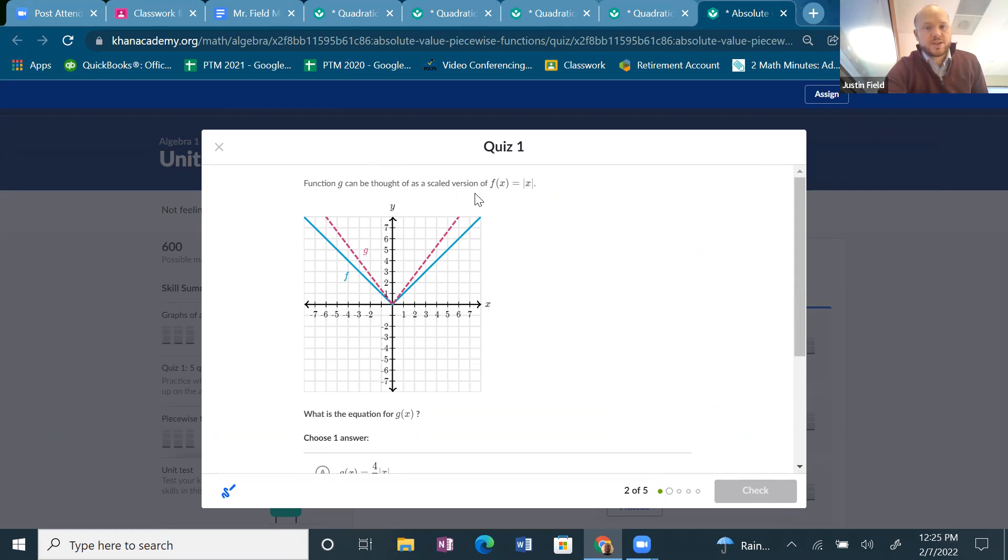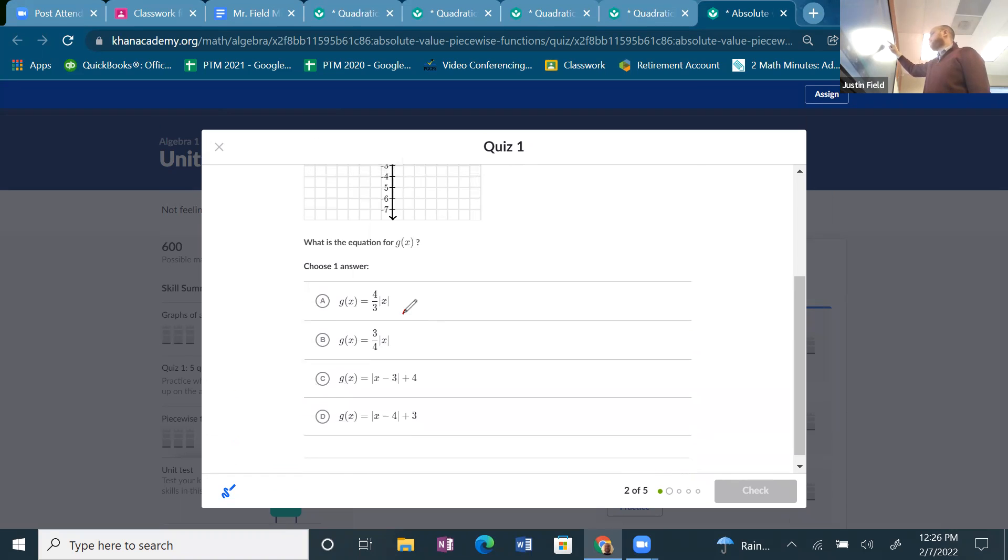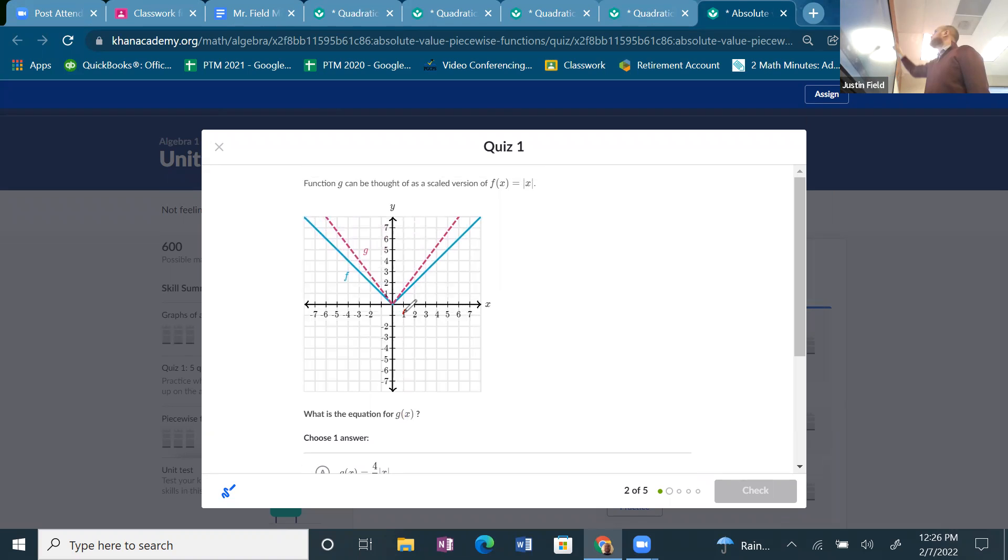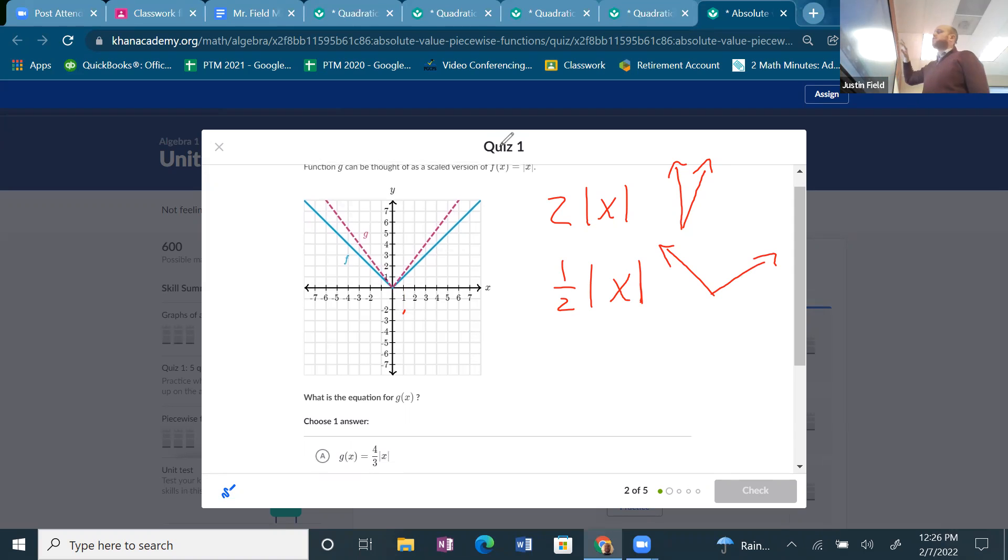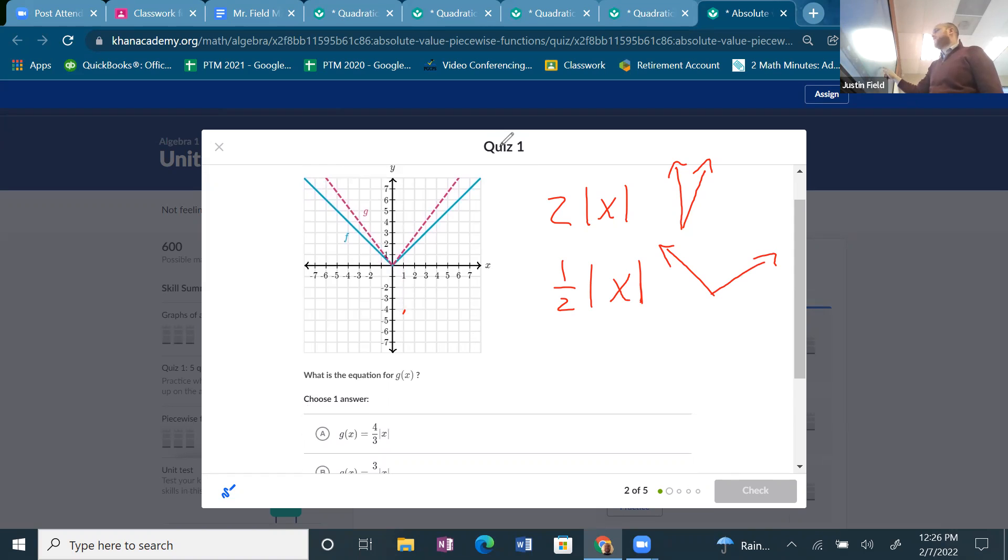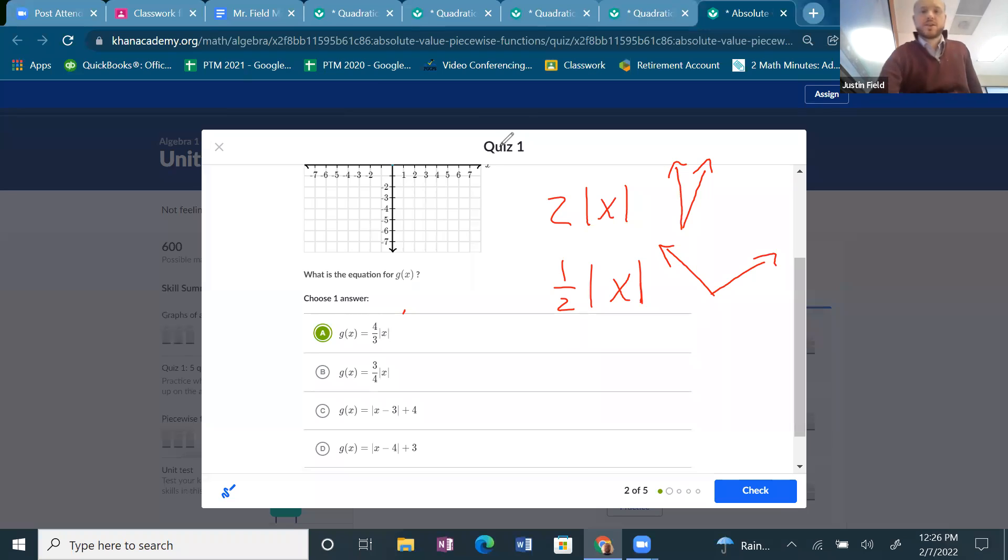All right, now, this is a size change scale version. So our F is the basic function. And I know it's a shrink there. Well, and you put a number in front that's bigger than one that makes it, that shrinks the function. If you were to put a number that is in between zero and one that would stretch the function. And then those other two choices I just saw those would shift the function. And since G is a skinnier version that must have a number bigger than one. And the only number bigger than one is a. So I'm going to choose that.